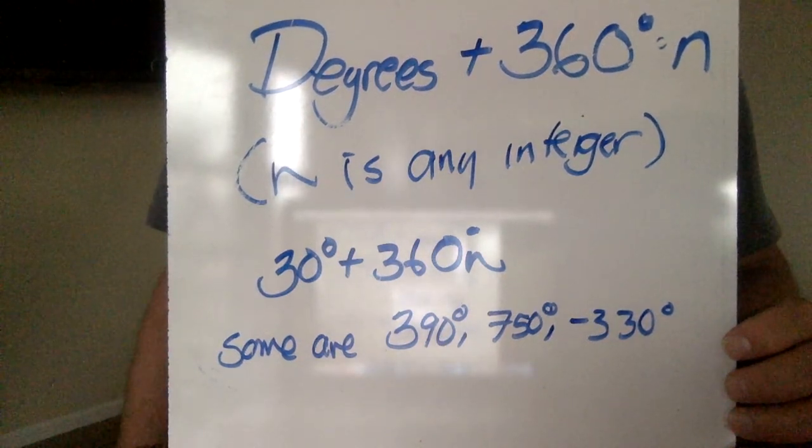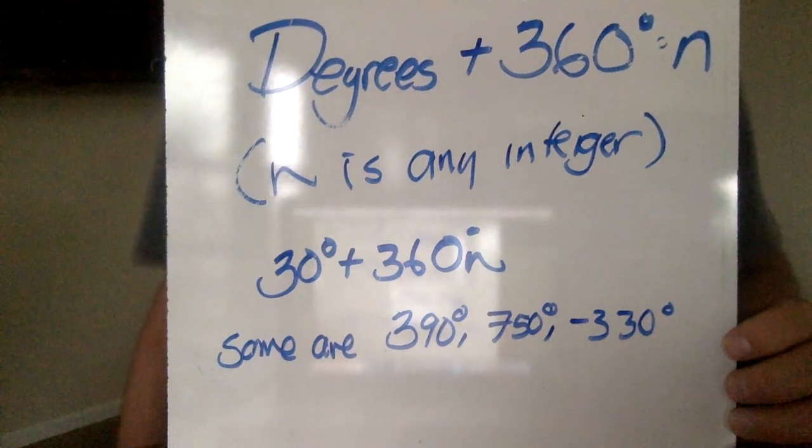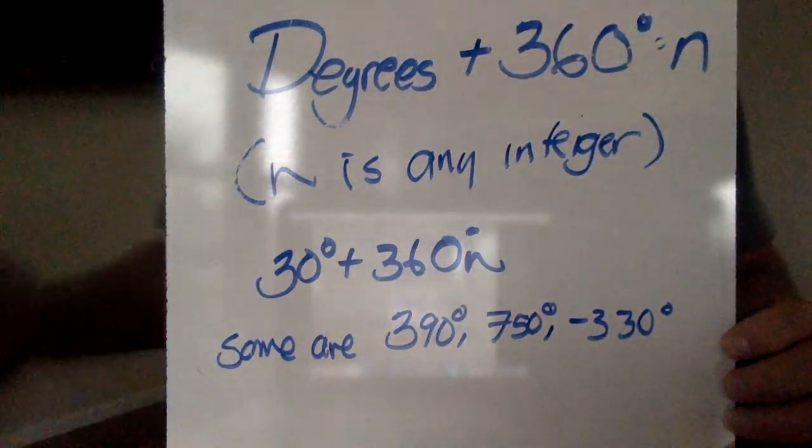Also another one could be negative 1. So it would be 30 plus negative 360. And there's your negative 330.